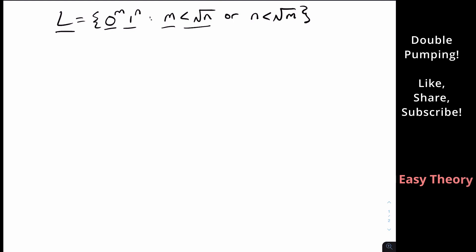So there are fewer zeros than the square root of the number of ones, or the number of ones is less than the square root of the number of zeros. And what we're going to prove here is that this is not regular.